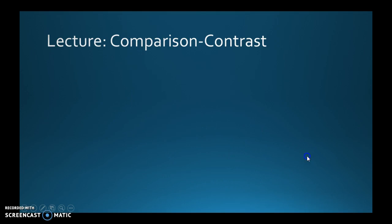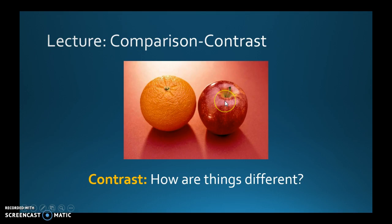Whereas with contrast, you ask how are things different? Both of these are fruits but they're not the same — one's orange, one's red; one's an apple, one's an orange. So compare and contrast means you're looking at how things are the same and how things are different.